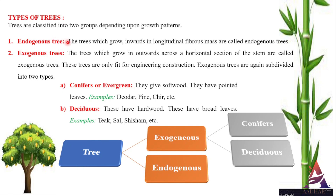Number one: endogenous trees. These are trees that grow inwards in a longitudinal fibrous mass, such as banana, bamboo, plum and cane. Even though the stem of trees of this class is light and tough, yet it is too flexible and slender to furnish material suitable for engineering works. These trees grow inwards and fibrous mass is seen in their longitudinal sections. Timber from these trees has very limited engineering applications.